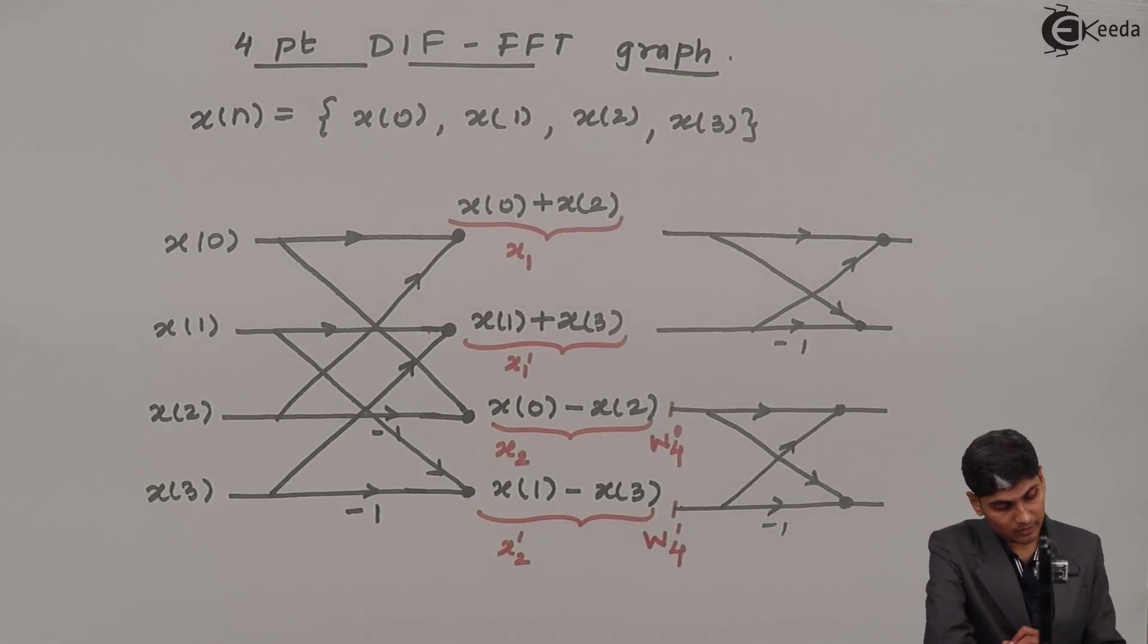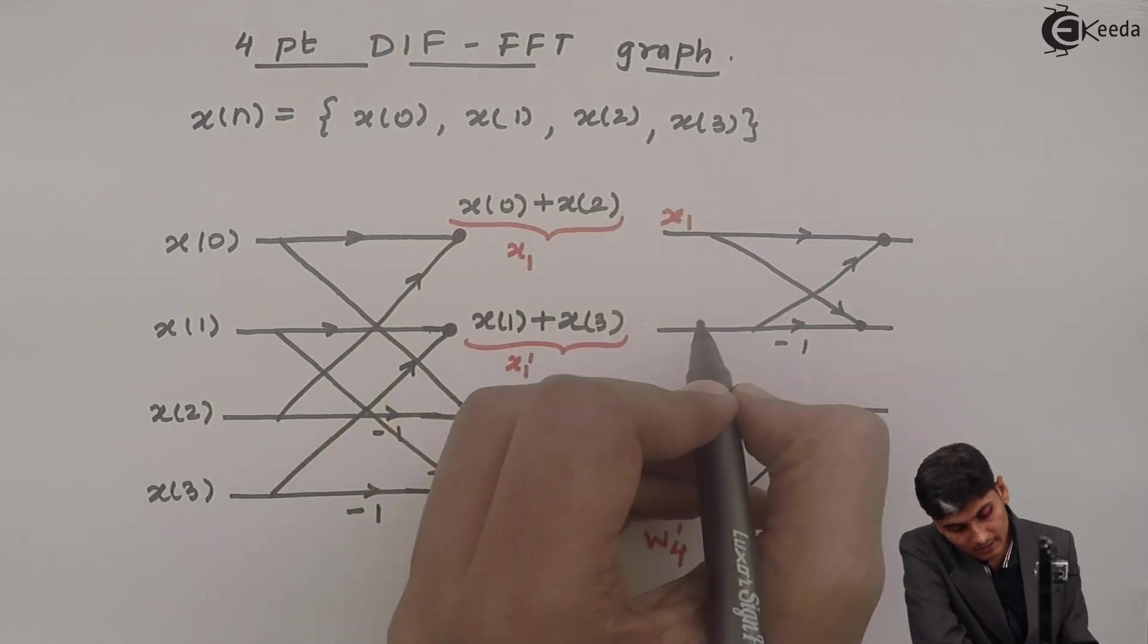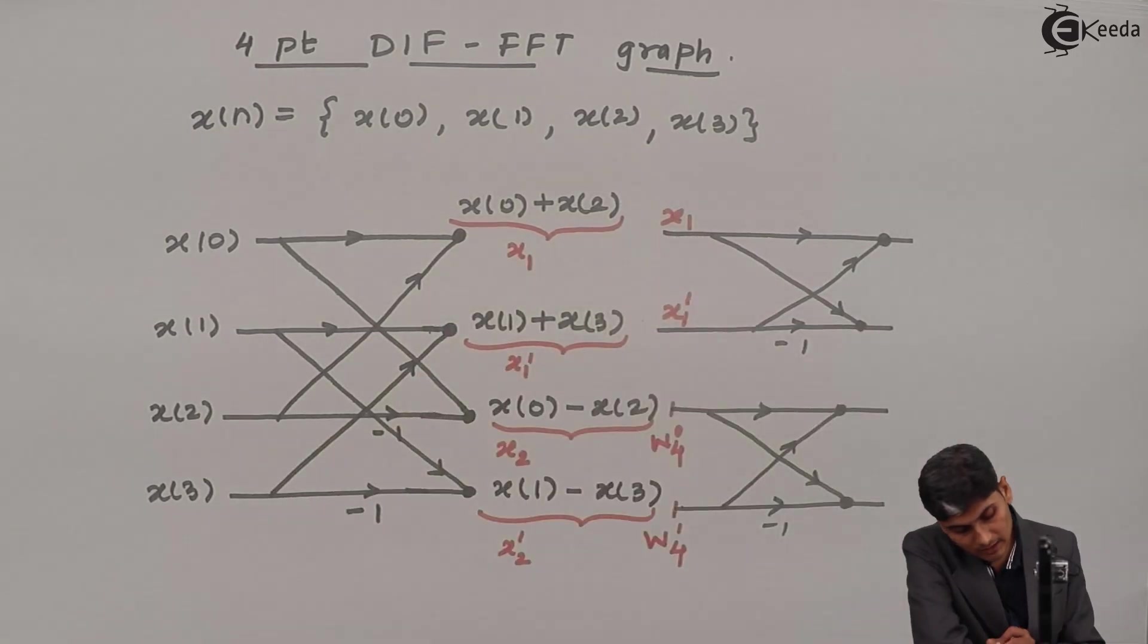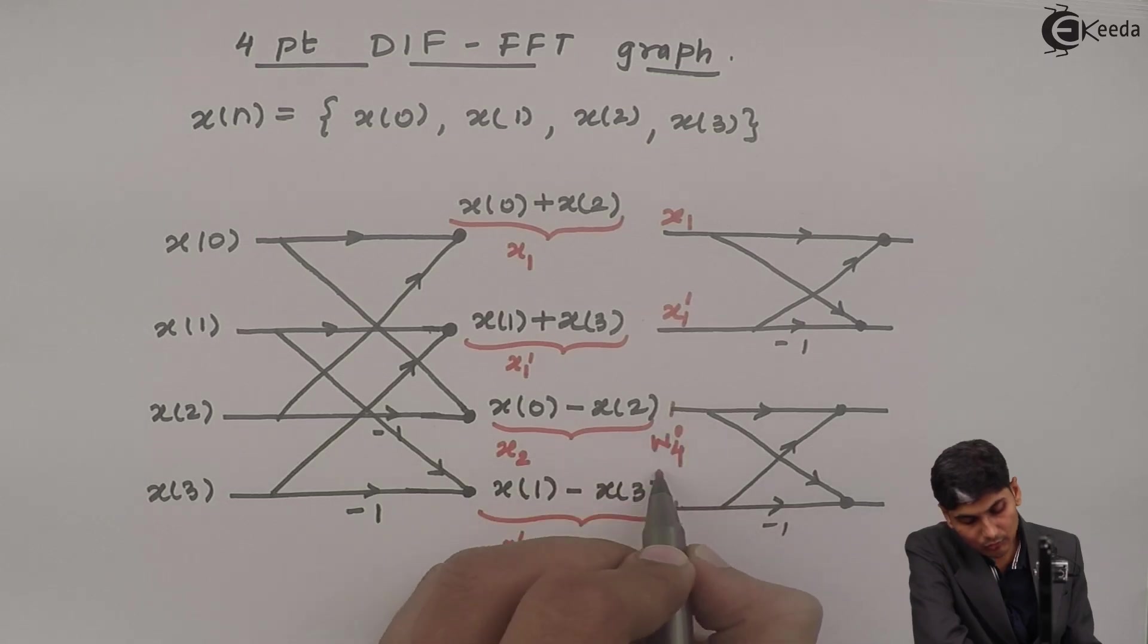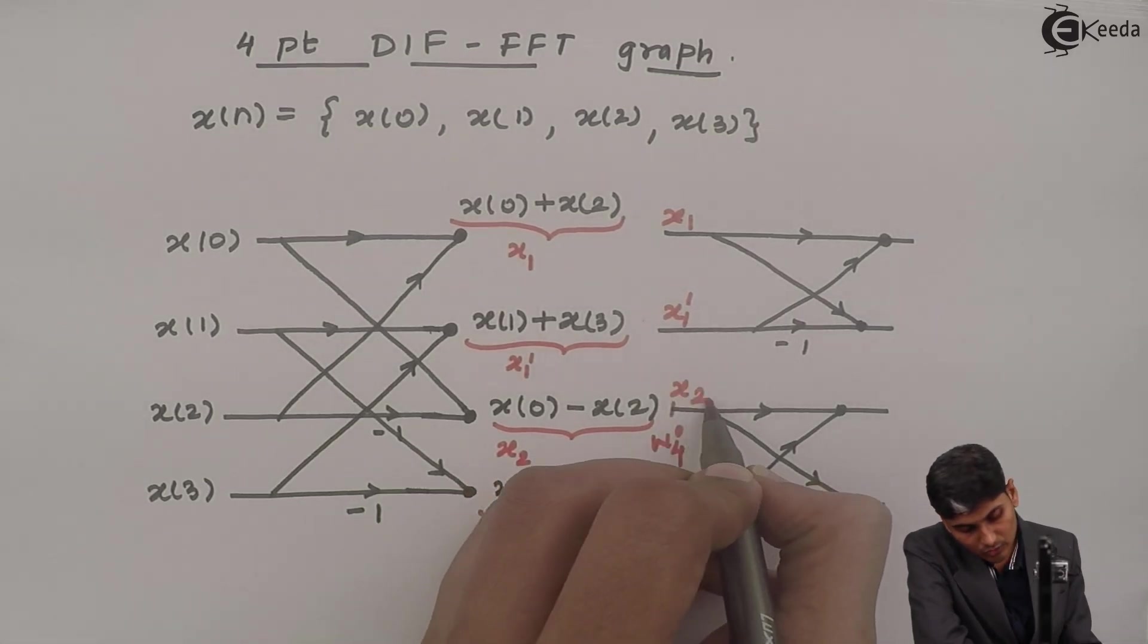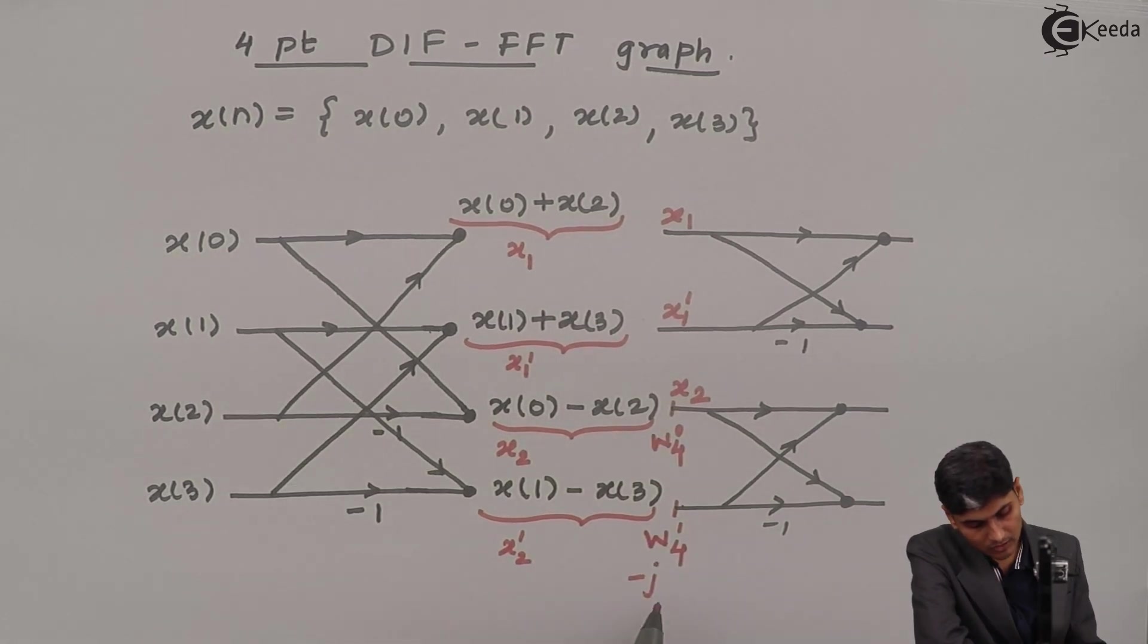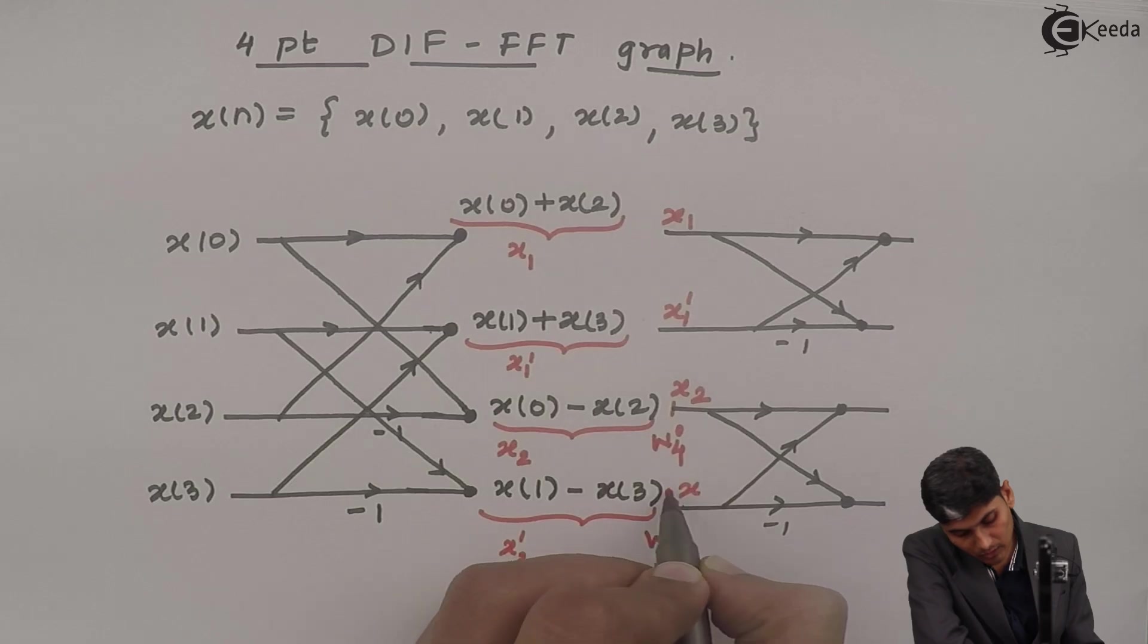So the new samples inputted, here it comes x1 as it is, here it comes as x1 dash as it is. Here because W4 raised to 0 is 1, so when I multiply with this, it is x2. And W4 raised to 1 is minus j. So when I am going to multiply, it is going to be minus j x2 dash.